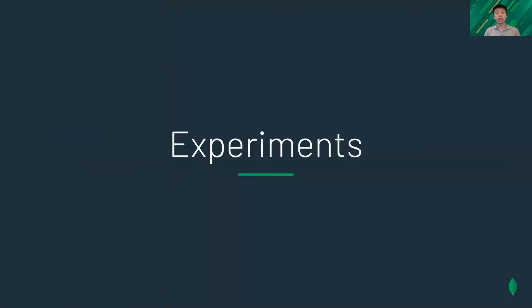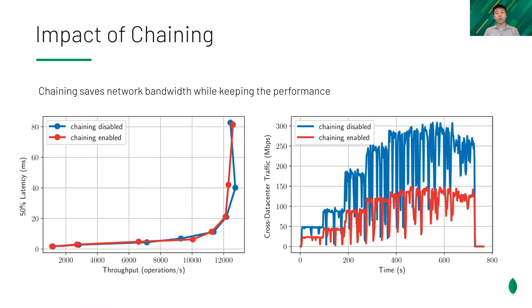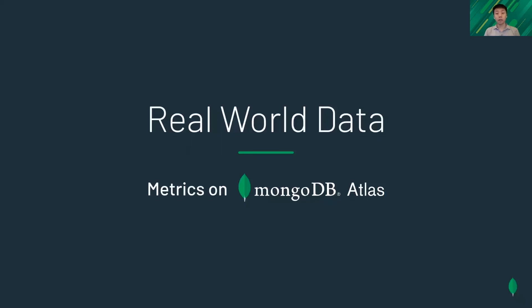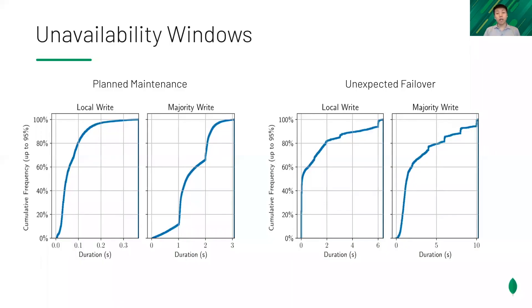We performed some experiments showing that MongoDB achieved its design goals and can replicate data efficiently. When two secondaries are in a different data center than the primary, one pulling from the other would save half of the cross-data-center traffic compared to both pulling from the primary, while the performance is the same. Atlas is a hosted database-as-a-service offered by MongoDB. In the data we collected on Atlas, we saw that the system can recover from failures efficiently. We measured the time from starting the election to when the new primary is available for local and majority writes. For both planned and unexpected failovers, the new primary starts to commit writes within seconds.